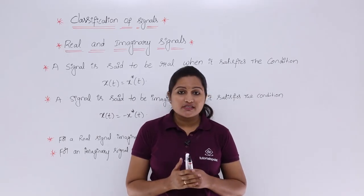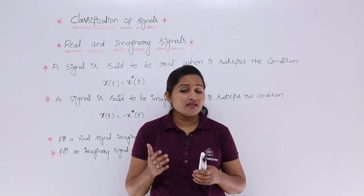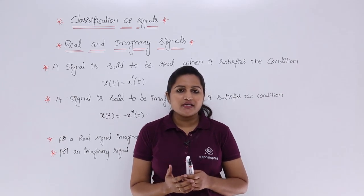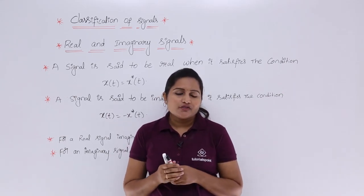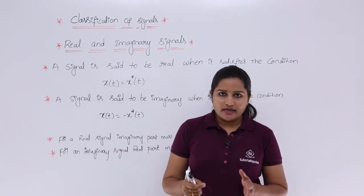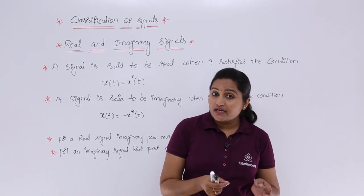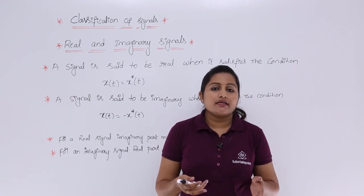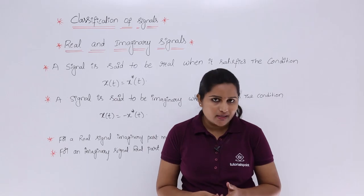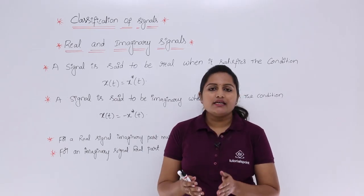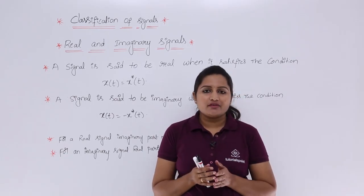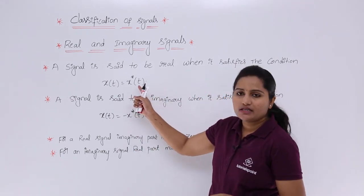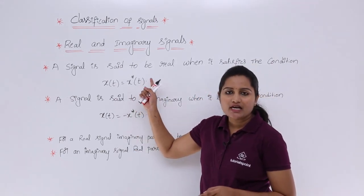In this video we are going to discuss the final classification of signals — that is real and imaginary signals. As the name indicates, a real signal would not have any imaginary part and an imaginary signal would not have any real part. A signal is said to be real when it satisfies the condition x(t) = x*(t).